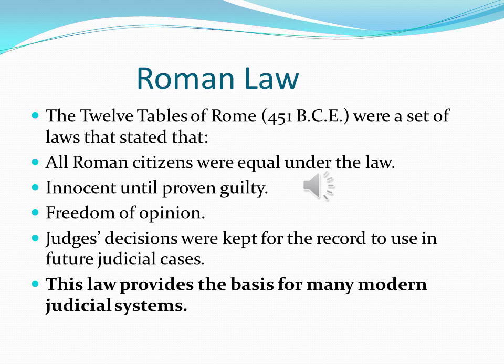Roman law: the Twelve Tables of Rome, 451 BCE, were a set of laws that stated that all Roman citizens were equal under the law, and an accused person was innocent until proven guilty. They had to provide evidence that the accused person was guilty before they could be charged with a crime. There was freedom of opinion, and judges' decisions were kept on record to use in future judicial cases — very similar to what is done today in many modern judicial systems.